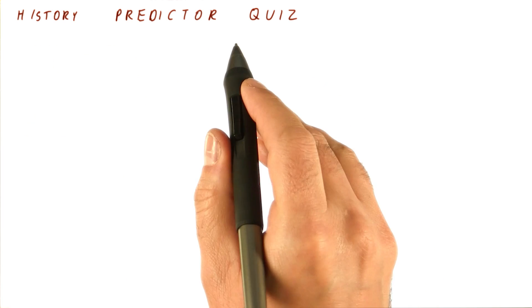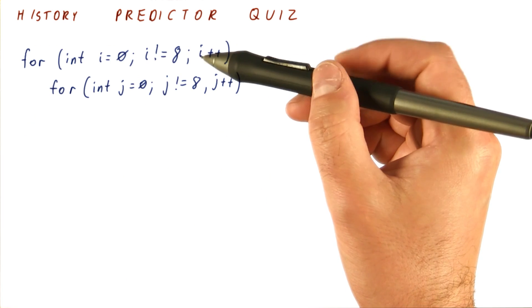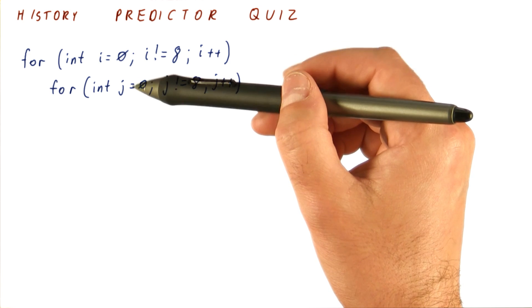Let's do another quiz about history predictors. Let's say we have a program in which we have two nested loops.